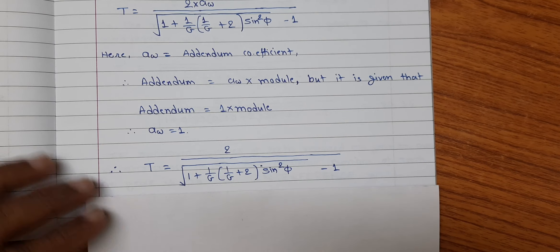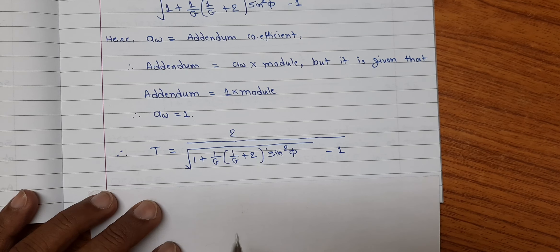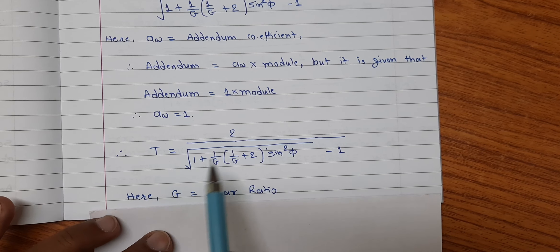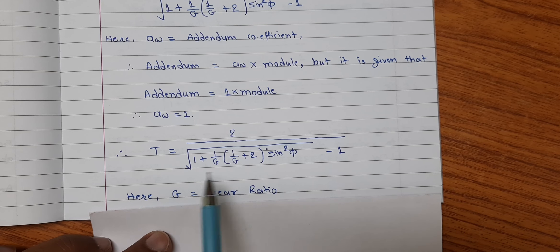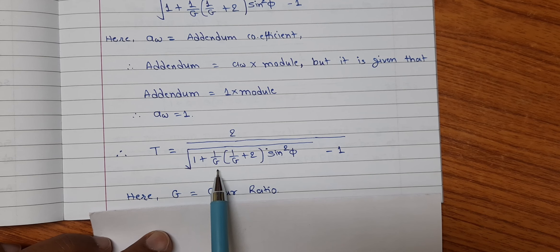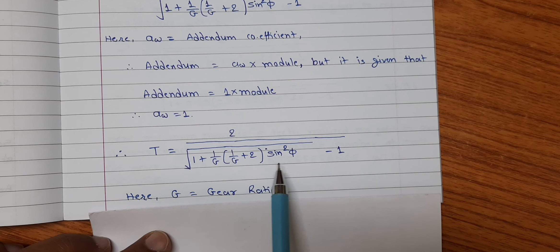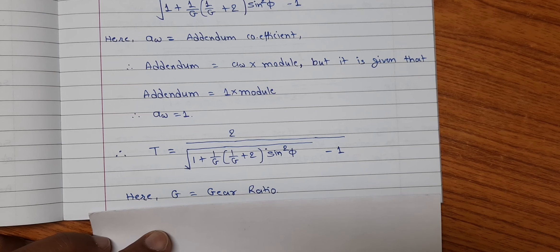So, we can rewrite the equation for minimum number of teeth. t is equal to 2 divided by under root 1 plus 1 upon g into 1 upon g plus 2 into sin square phi minus 1.